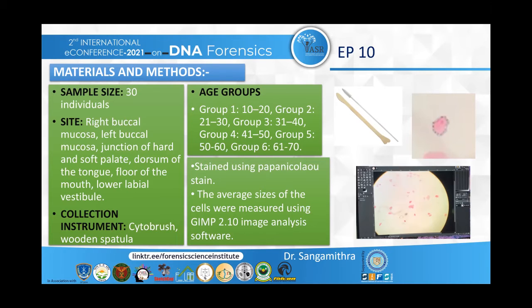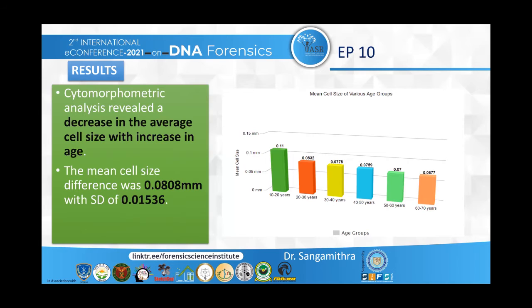From each patient, I took oral smears from six sites: right buccal mucosa, left buccal mucosa, junction of hard and soft palate, dorsum of the tongue, floor of the mouth, and lower labial vestibule. Among these six sites, samples from three sites were collected using a cytobrush and the other three using a wooden spatula.